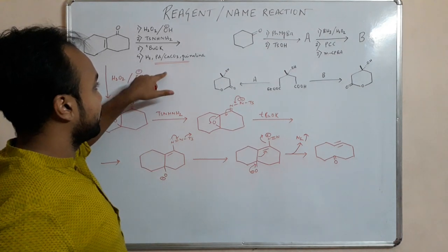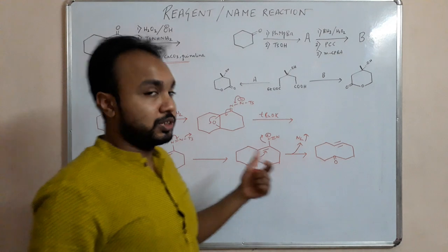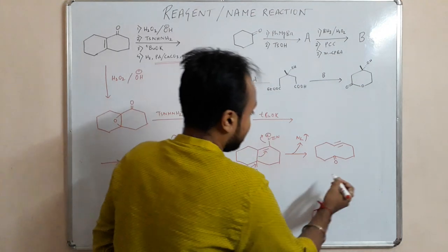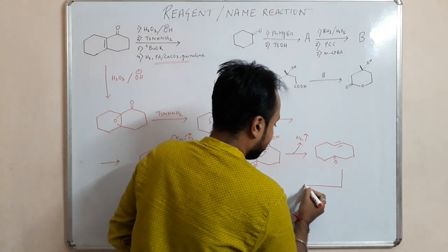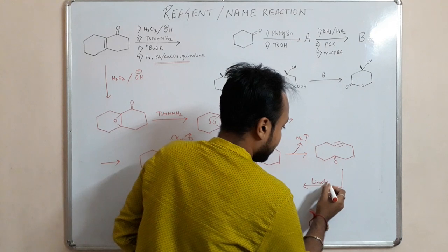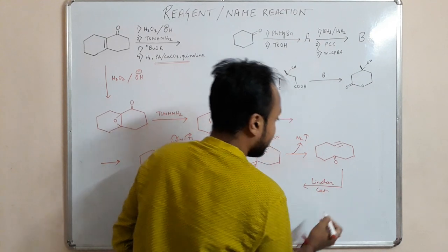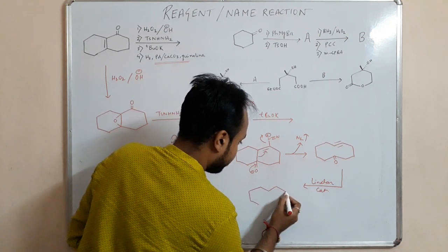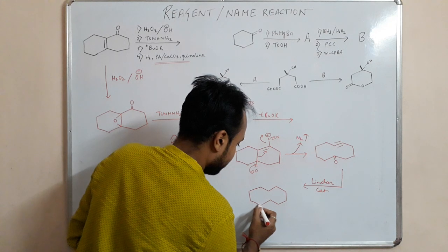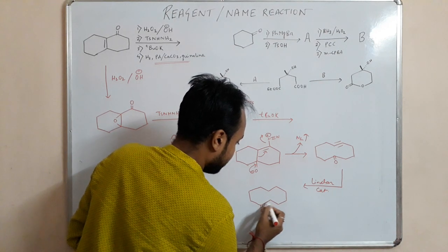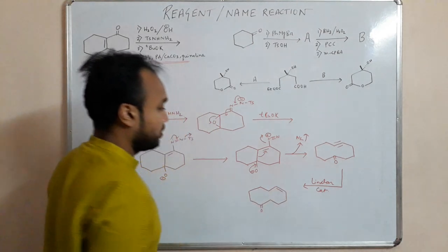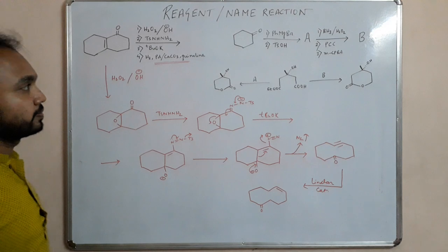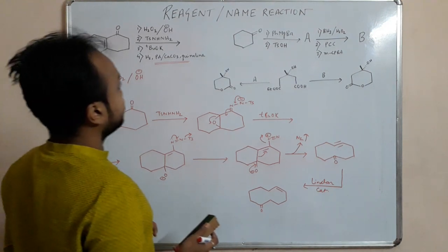So if we are given sodium liquid ammonia then it will be Birch reduction that will form a trans type of double bond, but here it is Lindlar catalyst. So this is the final product, so the answer will be this one. Okay so proceed to the next one.